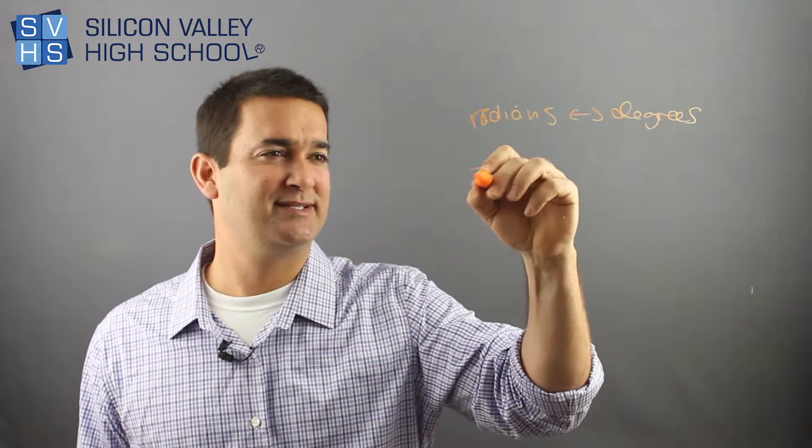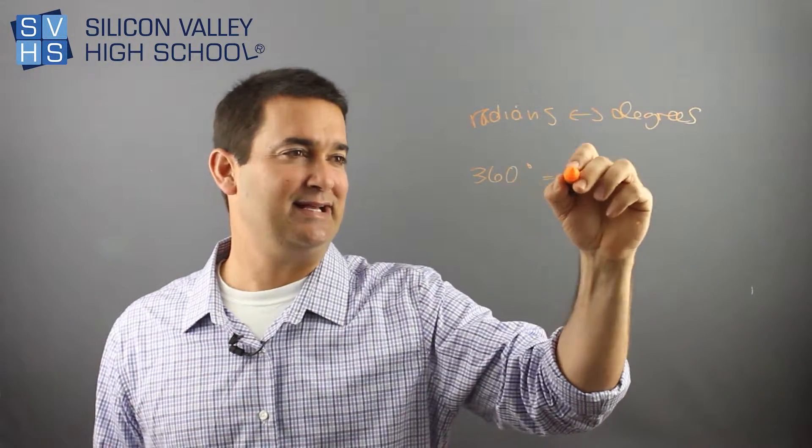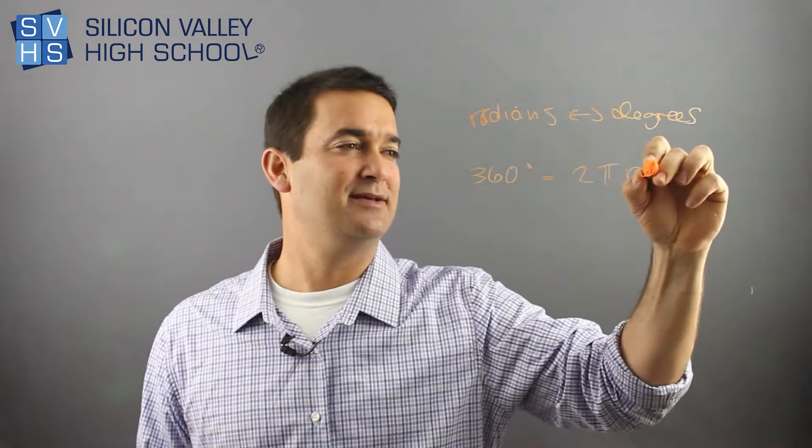And actually, 360, if we call it a full circle degrees, is equal to 2 pi radians. And that is a full circle.